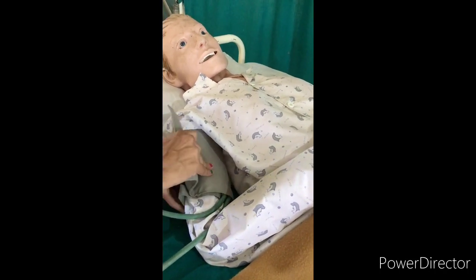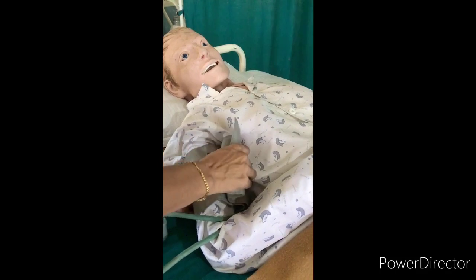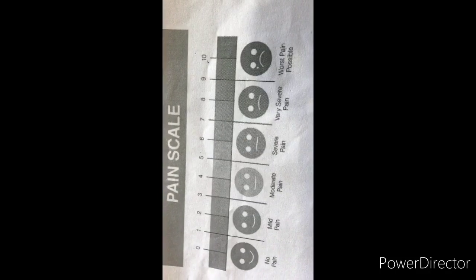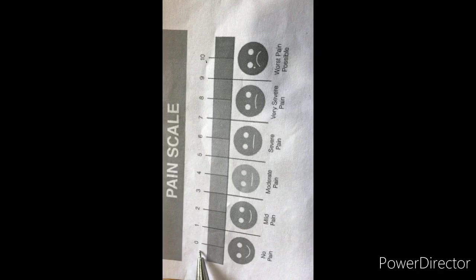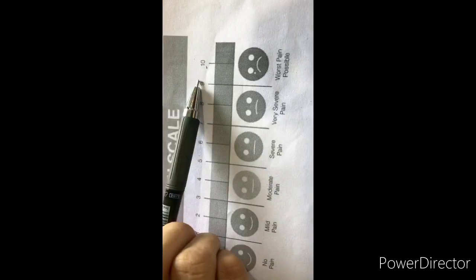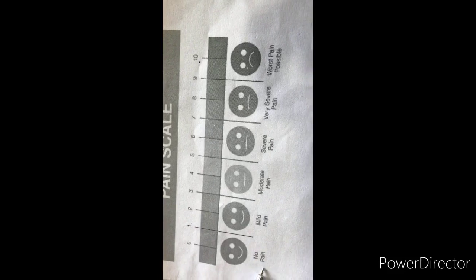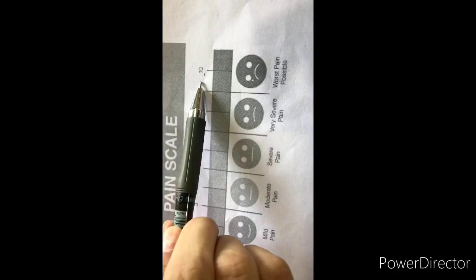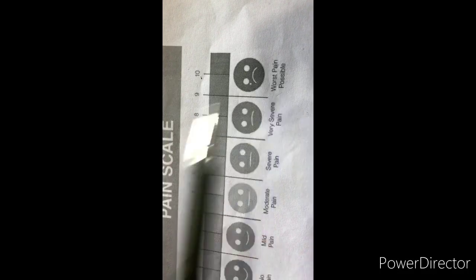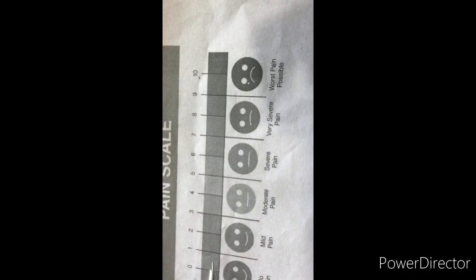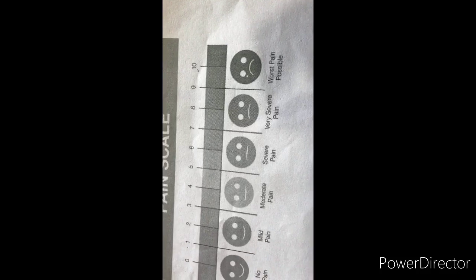Now measure pain using the pain scale. The pain scale ranges from 0 to 10. A score of 0 is the minimum, indicating no pain. A score of 10 is the maximum, indicating worst pain. Scores between 0 and 10 indicate mild to severe pain.